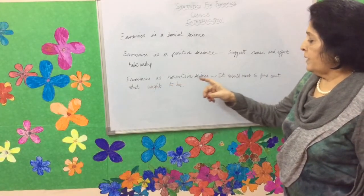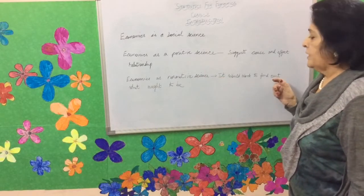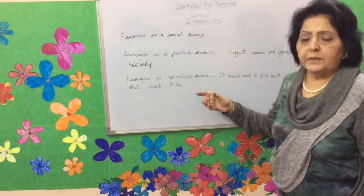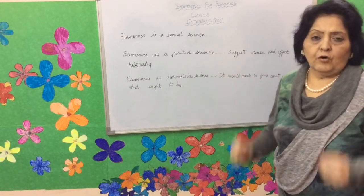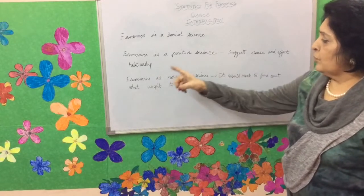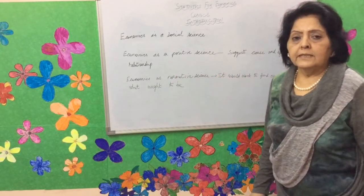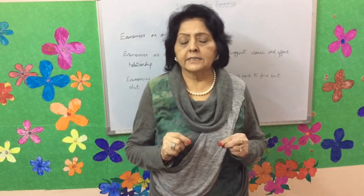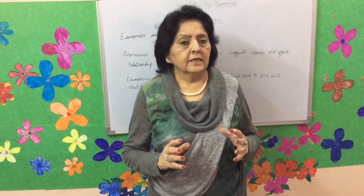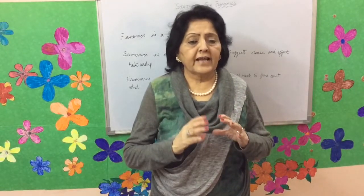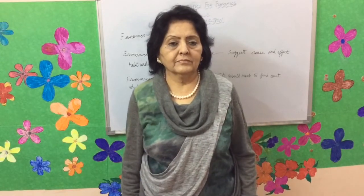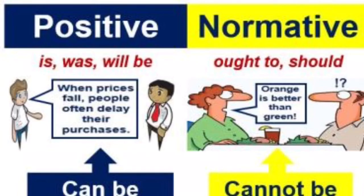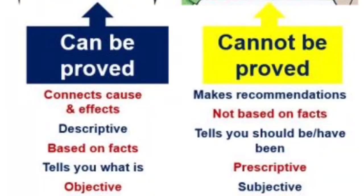Economics as a normative science works to find out what ought to be and how a problem should be solved. As a positive science, the example is that 25% of India's population is below the poverty line. As a normative science, economics suggests methods to eradicate poverty.